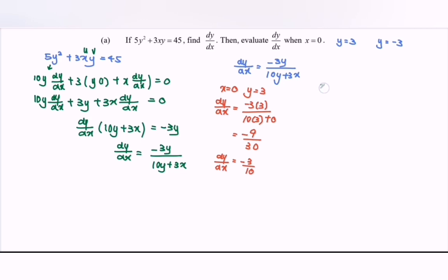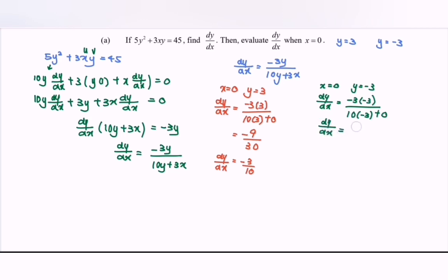For the next case, x is equal to 0 and y is equal to negative 3. So dy/dx equals negative 3 multiplied with negative 3 over 10 multiplied with negative 3 plus 0. That gives 9 over negative 30. Simplifying, dy/dx is equal to 3 over 10.